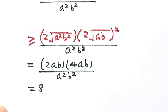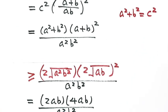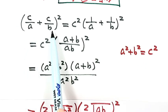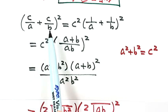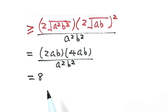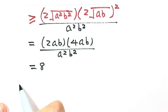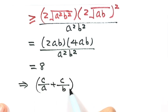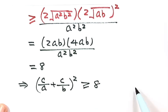So this gives us the left-hand side of the inequality is bigger than or equal to 8. So we have the conclusion: (c/a + c/b)² ≥ 8. We have just proved the inequality using the first method.